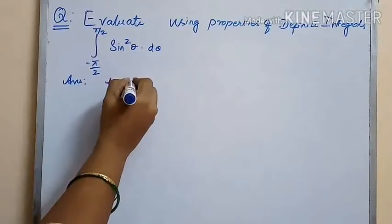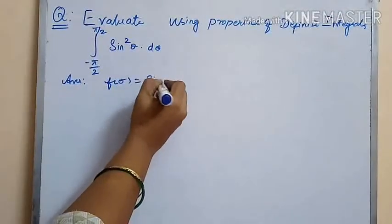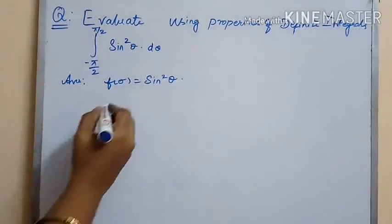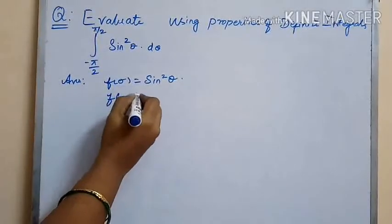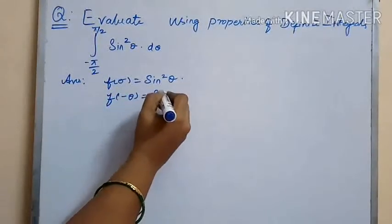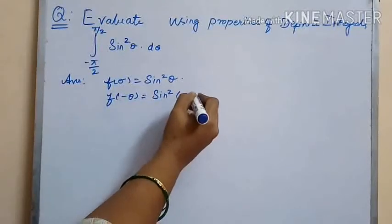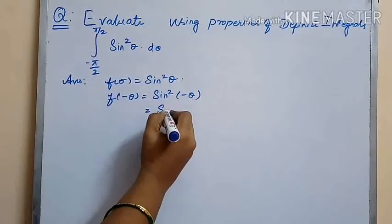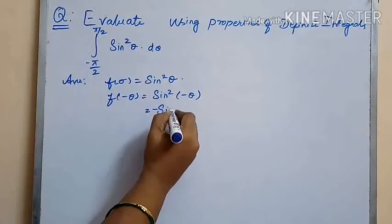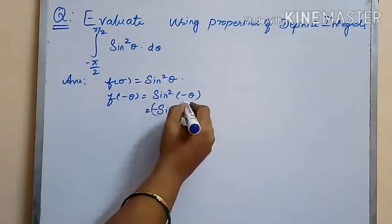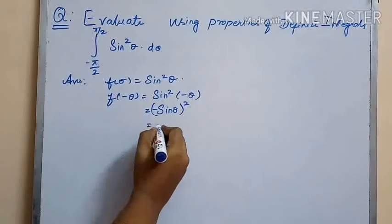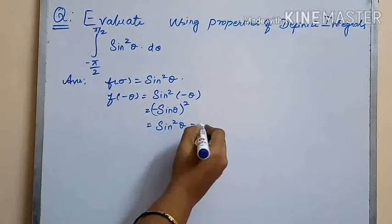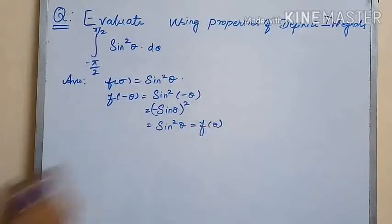The second problem we have is the integral from minus π/2 to π/2 of sin²(θ) dθ. Here f(θ) is equal to sin²(θ). So f(−θ) is equal to sin²(−θ), which is (−sin θ)², giving us sin²(θ), which equals f(θ).